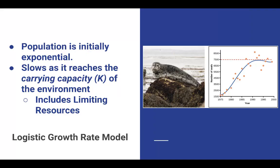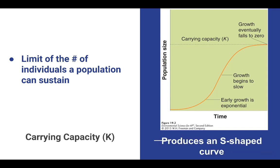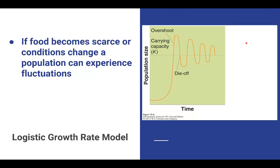Moving on, we look at logistic growth. Now we're actually incorporating population limits — lack of space, lack of food, increased competitors, things of that nature. What we're adding here is carrying capacity. Carrying capacity refers to the limits that will not allow a population to increase growth indefinitely. Unlike the J-shaped exponential curve, when we include carrying capacity, our curve becomes S-shaped. As food becomes scarce and other limits apply, what we'll see is fluctuations.